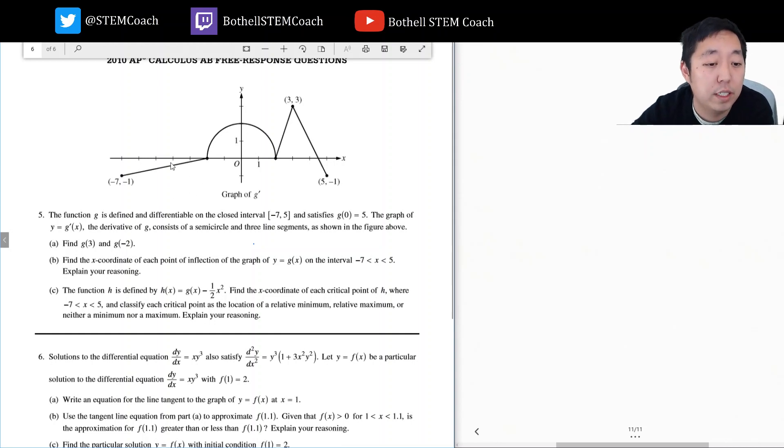The function g is defined and differentiable on the closed interval negative seven to positive five and satisfies g of zero equals five. The graph of g prime of x, the derivative of g, consists of a semicircle and three line segments shown in the figure above. Find g of three and g of negative two.